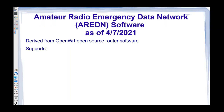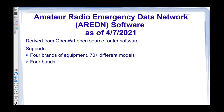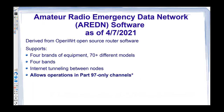The AREDN code supports the four brands of equipment I mentioned and now over 70 different models, so there are several different models to fit any situation. It supports four ham radio bands — at least in the US, I'm not sure about OFCOM. The presentation is US-oriented, so we'll make some compensations where we can. If you happen to be in an RF desert, they've added RF or internet tunneling between nodes, so even if you don't have an RF link to start with you can participate in the networking and get up to speed. Part 97 only channels — those are the FCC Part 97 ham radio only channels adjacent to the 2.4 and 5.8 GHz ham bands.